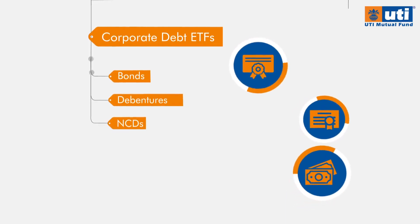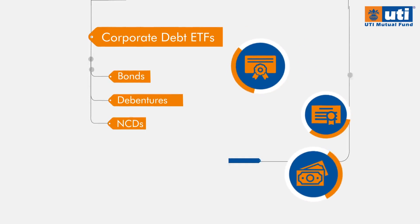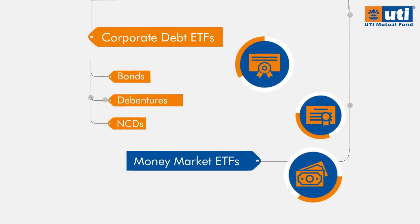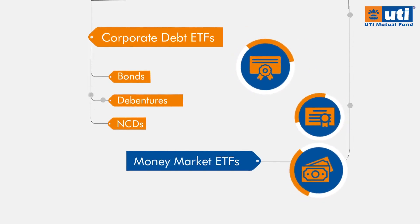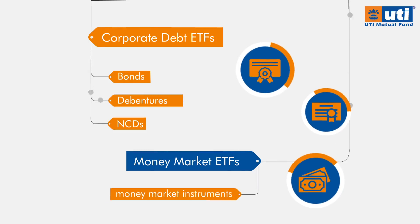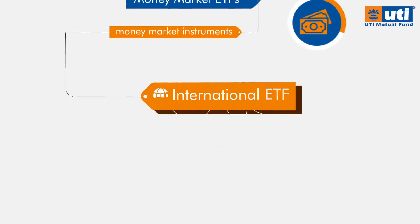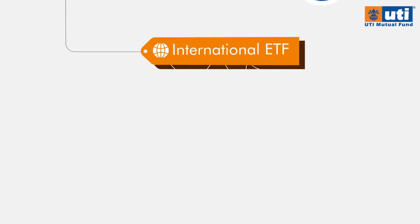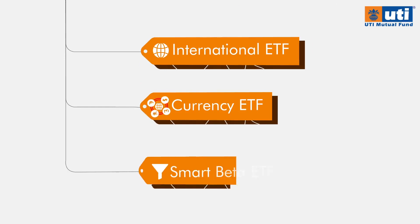Corporate Debt ETFs cover securities issued by corporate and other entities. Other ETF types include Money Market ETFs — based on an index with underlying money market instruments — as well as International ETFs, Currency ETFs, and Smart Beta ETFs.